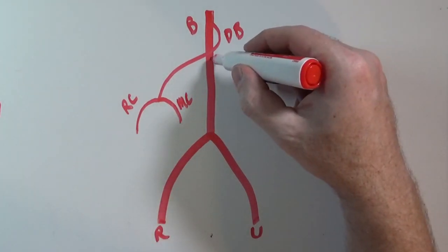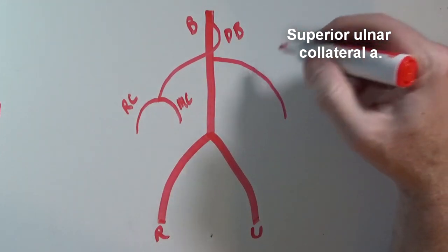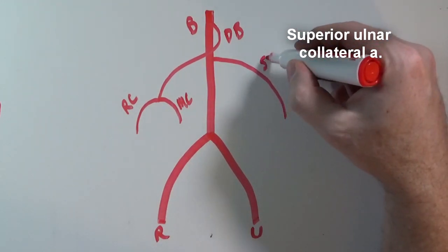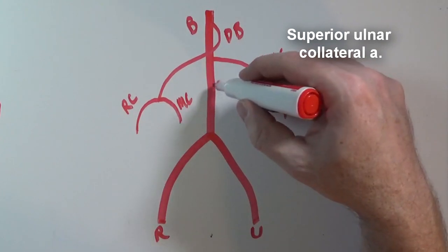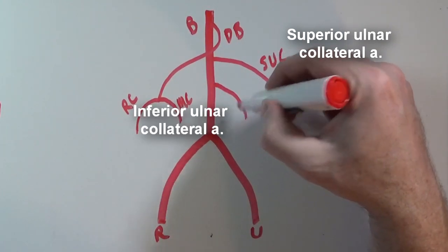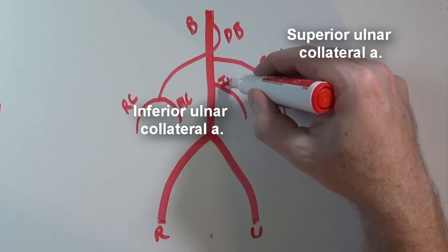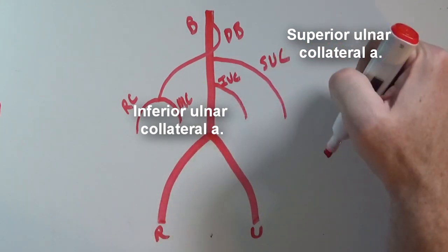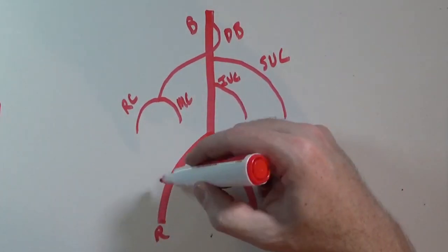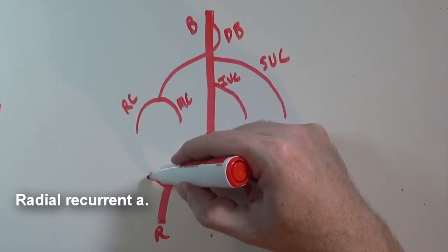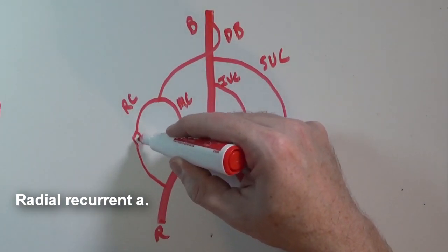Off the brachial artery we also have the superior ulnar collateral artery (SUC), and below that the inferior ulnar collateral artery (IUC). Branching off the radial artery, there is an artery that runs back called the radial recurrent artery.